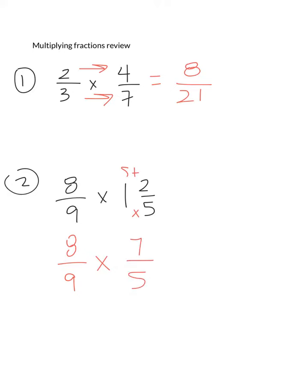And then we can go ahead and multiply straight across and we get 56 over 45 which is 45 goes into 56 once. 45 is the denominator and 56 minus 45 is 11. So your answer is 1 and 11/45.